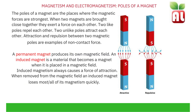Poles of a magnet. The poles of a magnet are the places where the magnetic forces are strongest. When two magnets are brought close together they exert a force on each other. Two like poles repel each other — for example, a north and a north. Two unlike poles attract each other — for example, a north and a south. Attraction and repulsion between two magnetic poles are examples of a non-contact force.